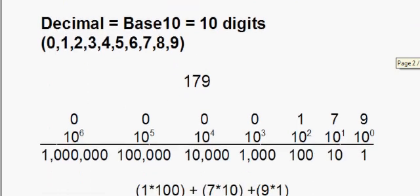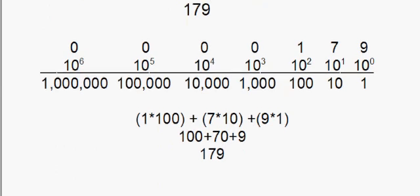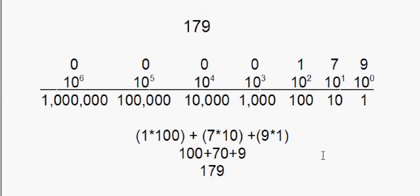In decimal, with the number 179, you have the ones place, the tens place, the hundreds place, thousands, ten thousand, hundred thousand, and a million. What that means is this is the 10 to the zero place. 10 to the power of zero is one. 10 to the power of one is ten. 10 to the power of two, or 10 times 10, is a hundred. 10 to the power of three, or 10 times 10 times 10, is a thousand. 10 to the four is ten thousand, then a hundred thousand and one million.